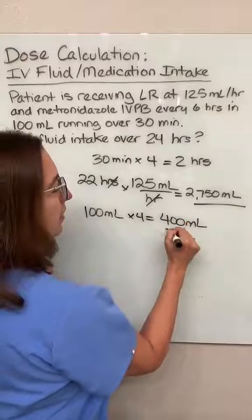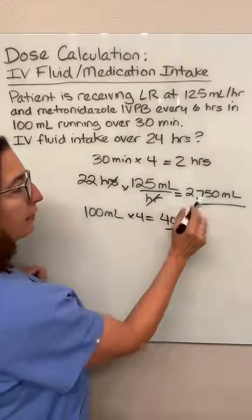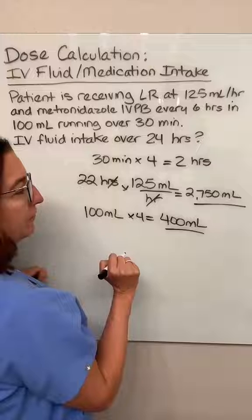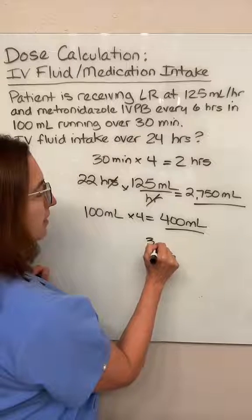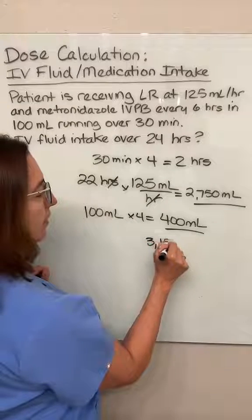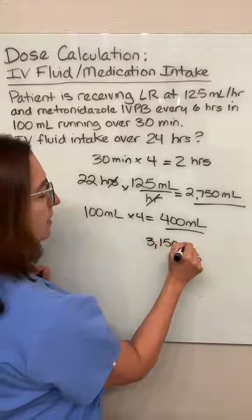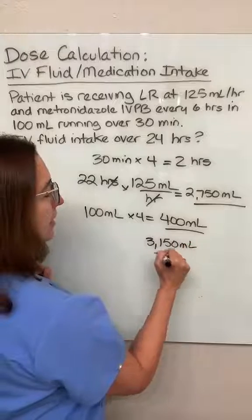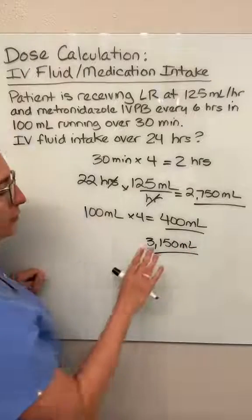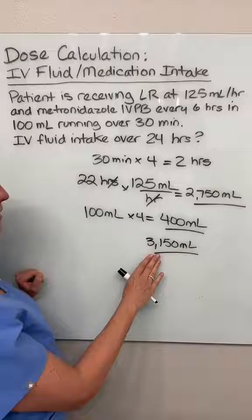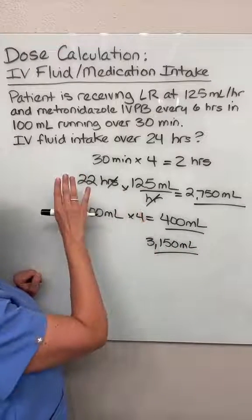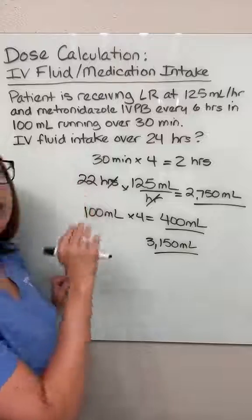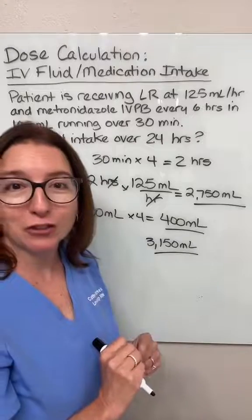So if you add up 2750 and 400 milliliters, you end up with 3,150 mLs. And that is their total fluid intake from their IV medications as well as their IV fluids.